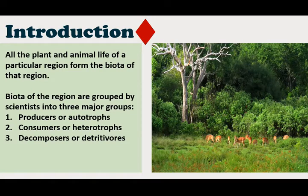All living plants and animals living in an area form the biota of that region. The biotic component in an ecosystem works as a complex system of competition and cooperation, where the action of every life form has an effect on all the others. Thus, any living organism within an ecosystem can be considered as a biotic factor.